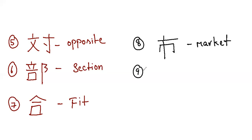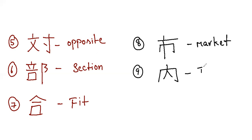Next is the kanji for inside. This kanji looks like the letter M, so you can remember it like M for market. It has three strokes. This is the kanji which means inside.